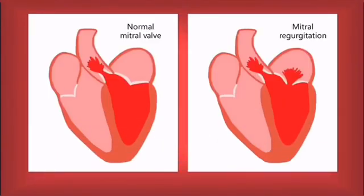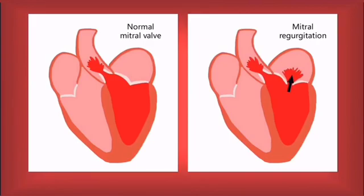Here is a visual representation of a mitral regurgitation. On the left, we can observe a normal mitral valve which closes properly during systole and prevents blood from flowing backwards into the atrium. On the right, we have a case of mitral insufficiency, in which during ventricular systole blood is ejected into the aorta but also through the imperfectly closed mitral valve and into the left atrium. As a result, the atrium will suffer from volume overload, eject more blood than normal during the next cardiac cycle, and the ventricle will receive a larger amount of blood during its diastole, leading to increased end-diastolic ventricular volume.